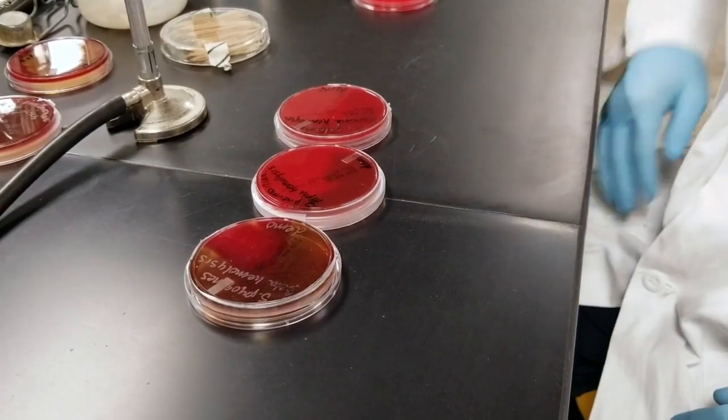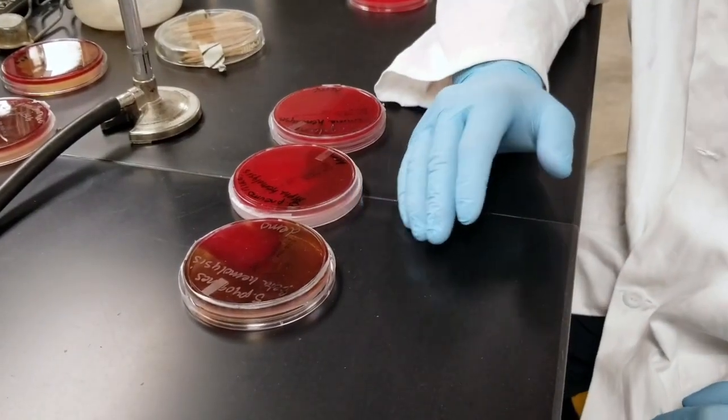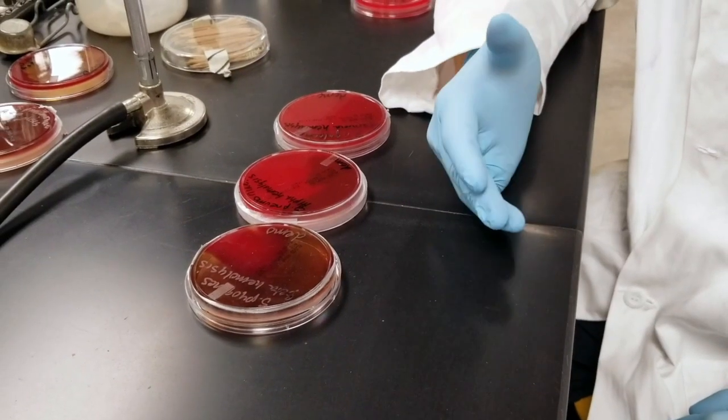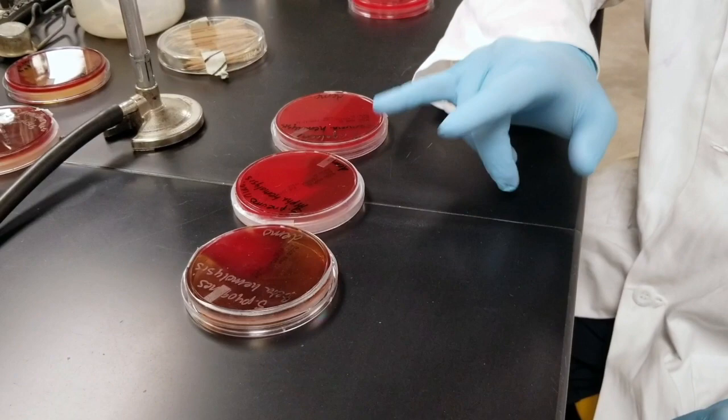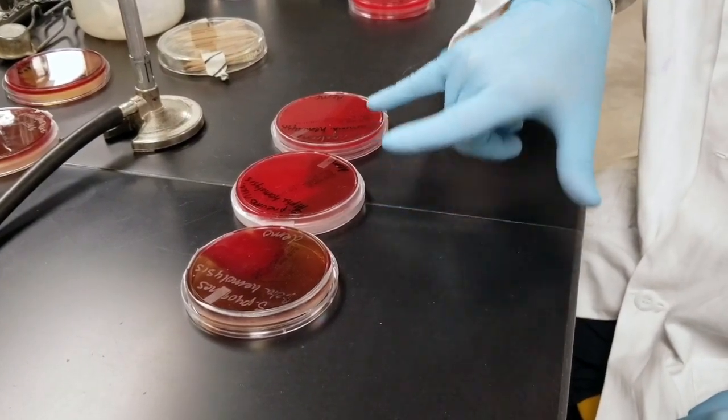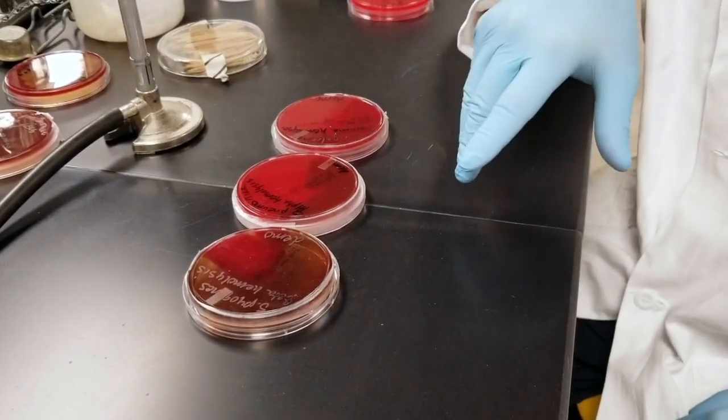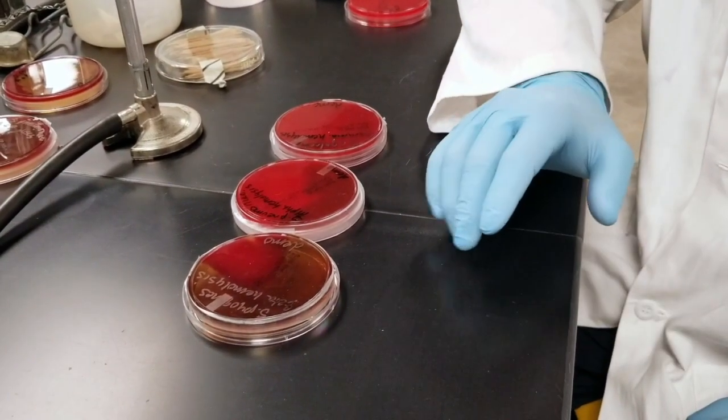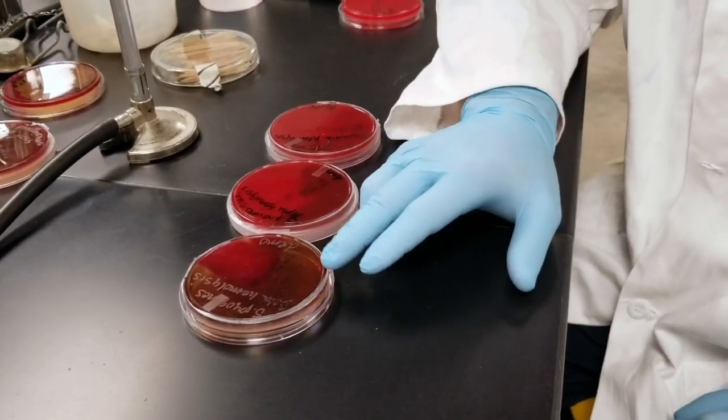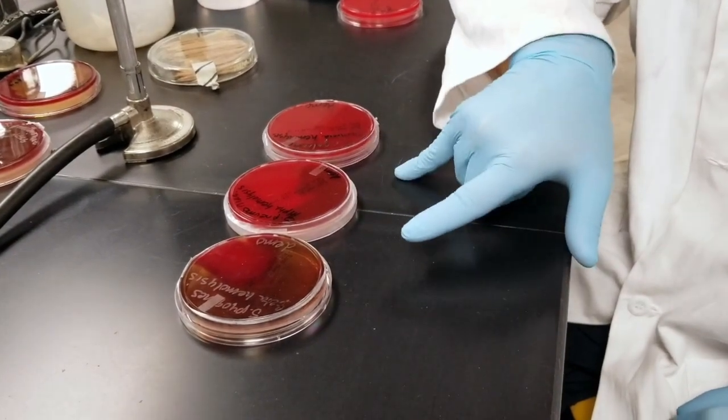So you have different forms of hemolysis. This is basically the lysing or breakdown of red blood cells. These different bacteria have a different ability to lyse these cells, and we see that based on the reactions on our blood agar plates.